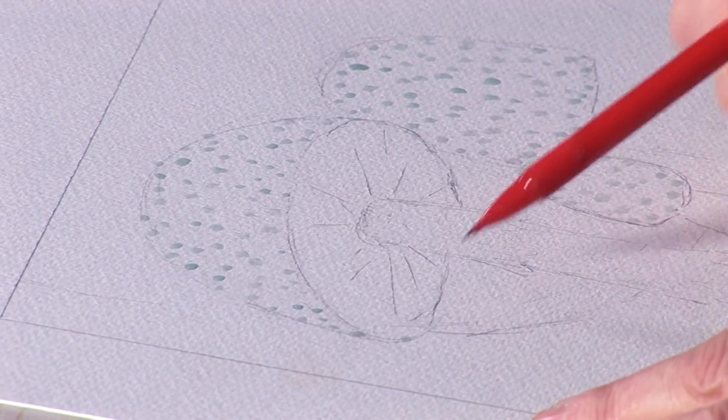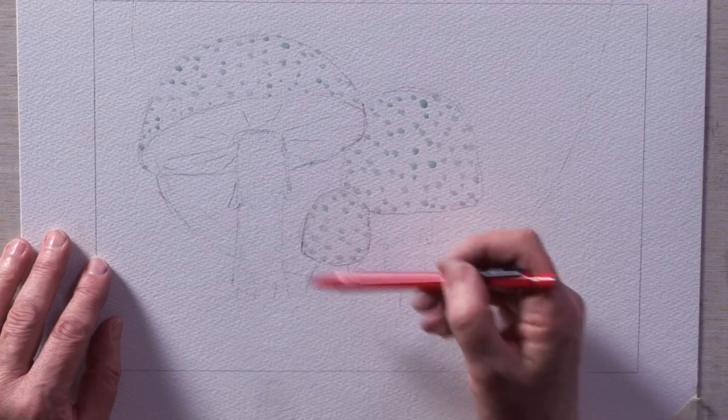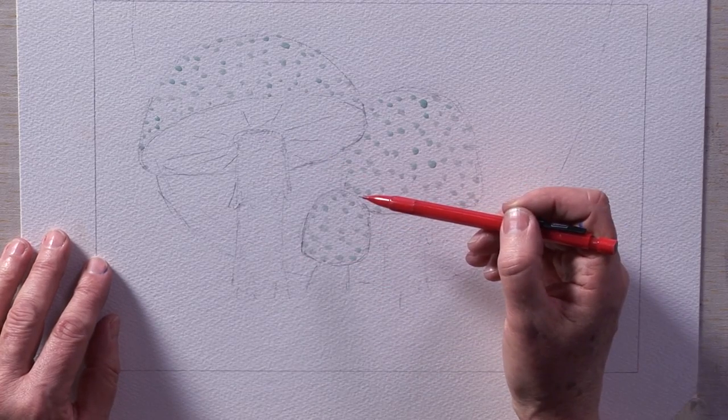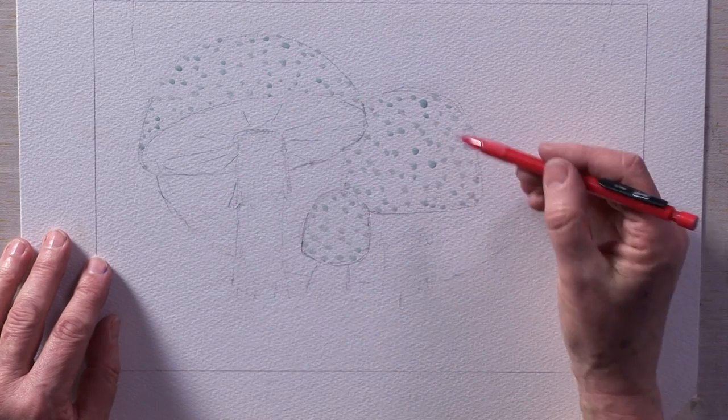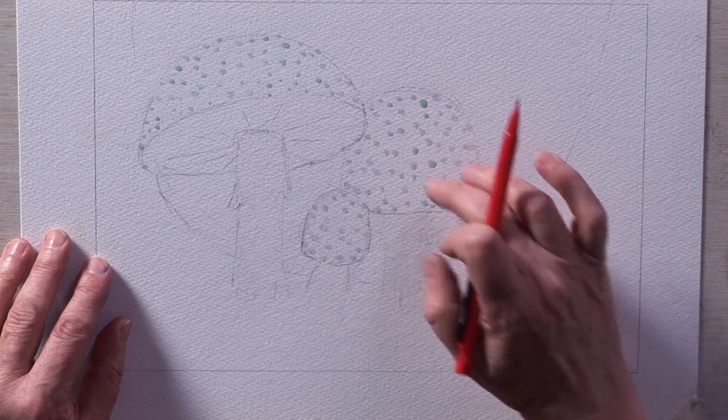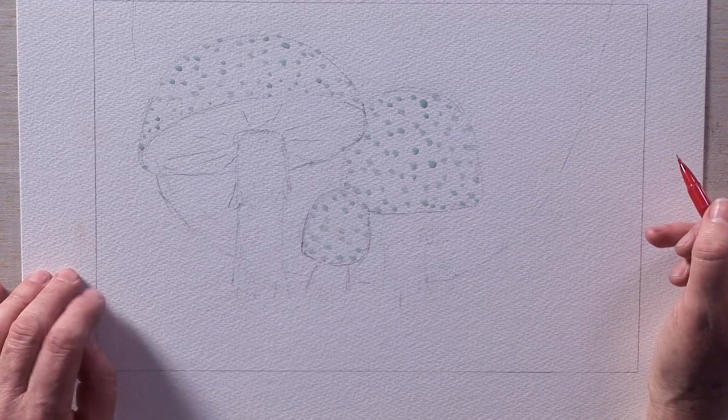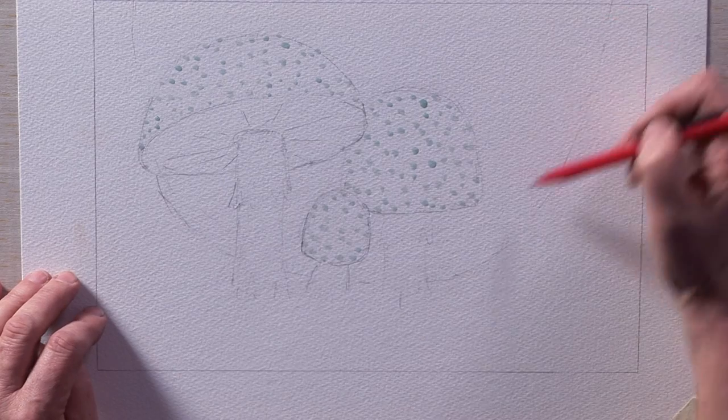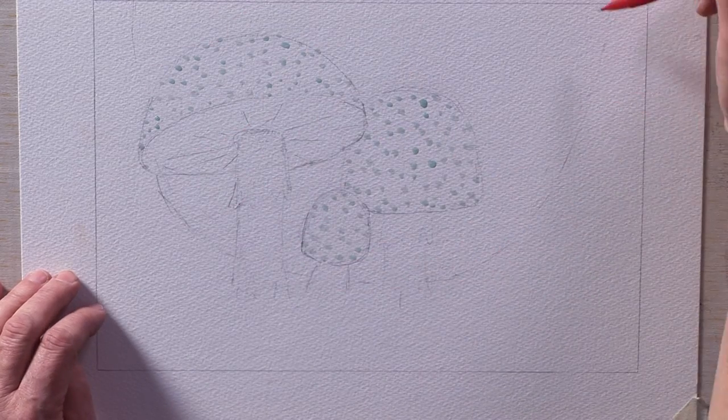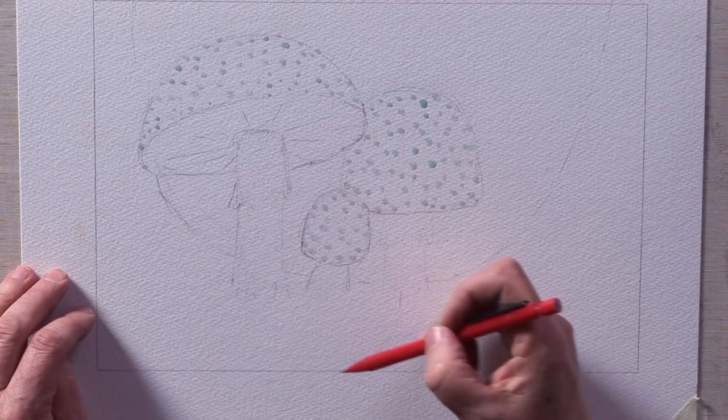I've already drawn out the toadstool shape. I've put three little cluster of three together and I've put some masking fluid on the tops here for where the little white spots on the red tops of these toadstools are going to come in the end. I've just put a little sweep round here, a nice little smiley face for where the tree trunks are going to come down into the base.